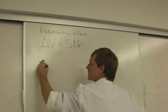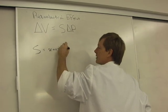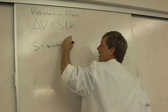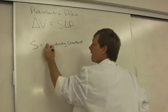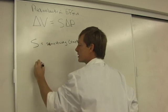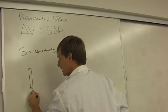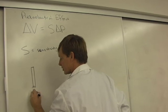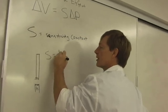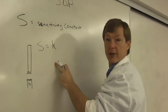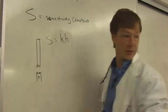This is the voltage. This is S. S is the sensitivity constant. I'll call it the sensitivity constant because it sounds funny. And the sensitivity, if you've got a slab of piezoelectric material, it's got a thickness H. The sensitivity is something called the piezoelectric constant times the thickness. That's what goes into it.